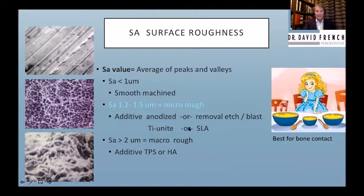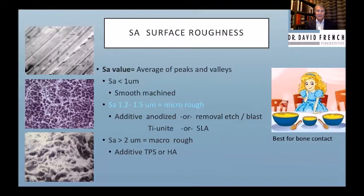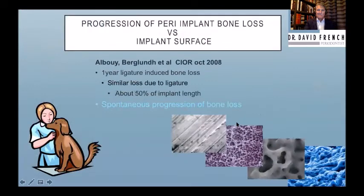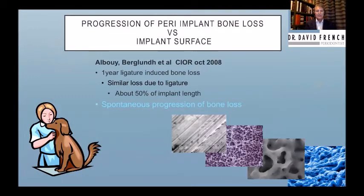The implants you may be most familiar with — TiUnite, the Straumann SLA, and also Astra — are all in that range of about 1.2 to 1.5. Now does the advantage of that roughness for getting bone contact create a liability in terms of peri-implantitis? That was a good question, and we understood as early as 2008 from a dog study where they put a ligature on the implant and then took it off and let disease spontaneously progress.